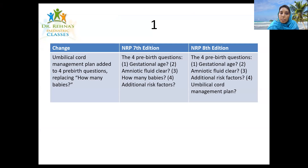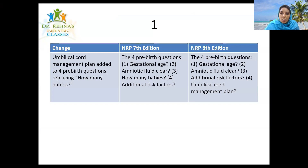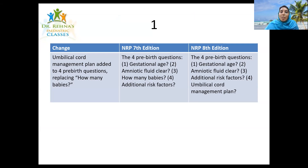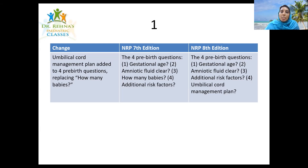The first change: the umbilical cord management plan is added to the four pre-birth questions, replacing 'how many babies.' In the seventh edition, the four pre-birth questions were: what is the gestational age, whether the amniotic fluid is clear, how many babies, and any additional risk factors. Now 'how many babies' is replaced by 'what is the umbilical cord management plan,' since multiple pregnancy falls under risk factors.